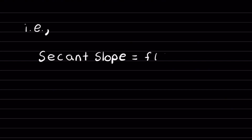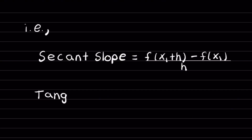In other words, rewriting the secant slope like we had before, the secant slope is equal to f of x1 plus h minus f of x1, all over h. So, our tangent slope is equal to the limit of the secant slope.